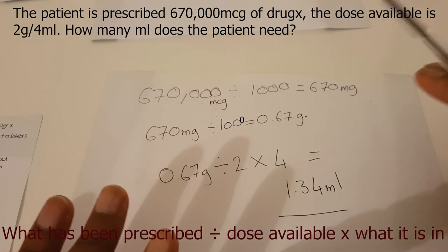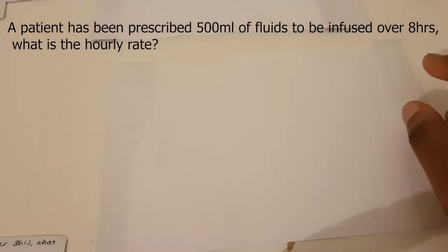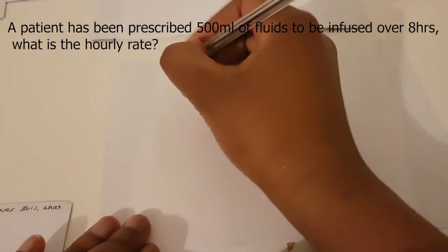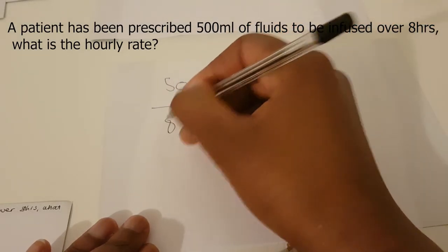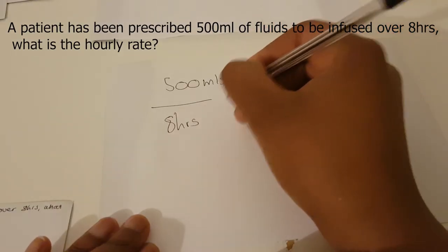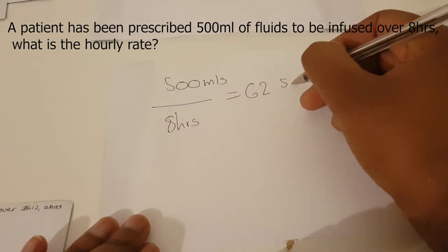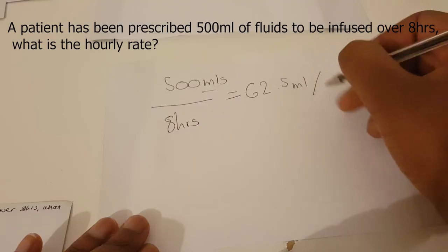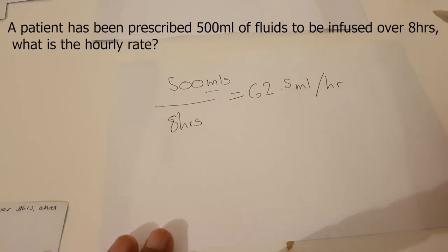All of these values are completely random — they don't represent any particular drug. Moving on to IV infusion rates: the patient has been prescribed 500 mils of fluids to be infused over 8 hours. What is the hourly rate? Simply do 500 divided by 8, and that gives you 62.5 mils per hour.